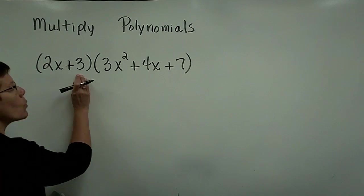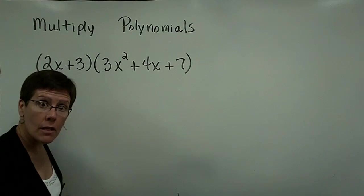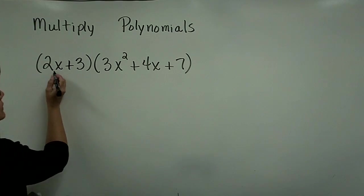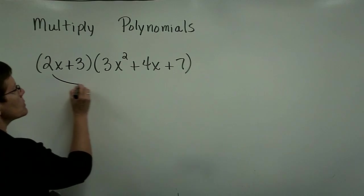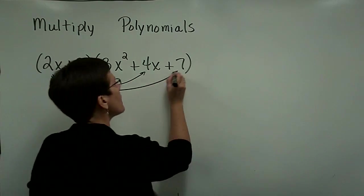Essentially, whatever's in one group, all the terms have to be multiplied by all the terms in the other group. So this 2x has to be multiplied by the 3x squared, by the 4x, and by the 7.